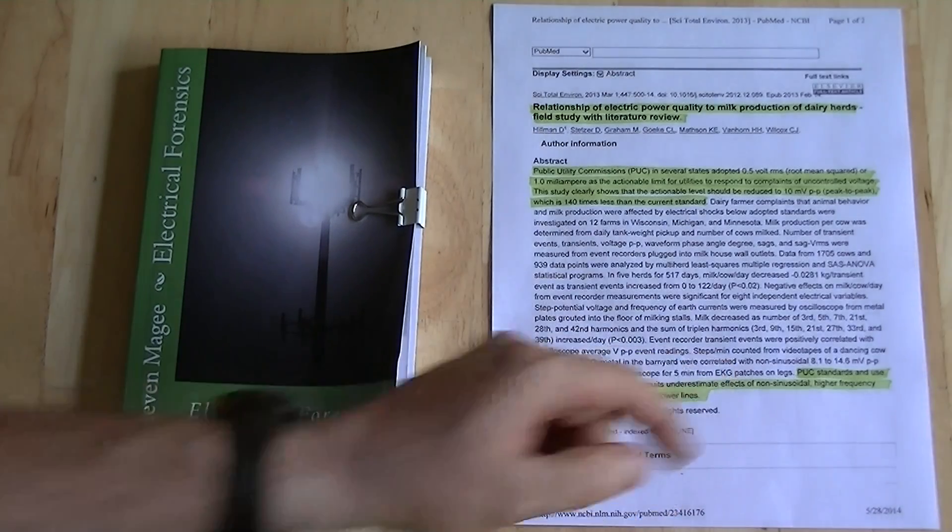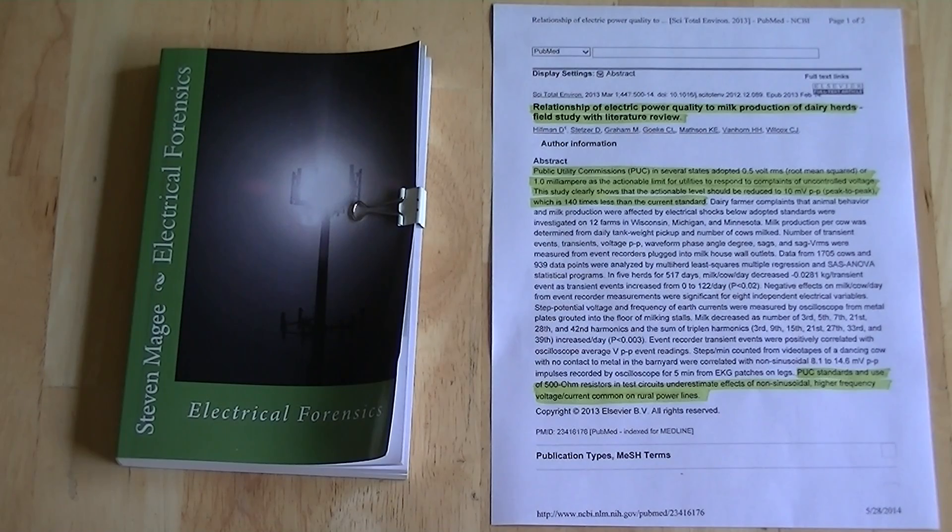It states, PUC standards and use of 500 ohm resistors in test circuits underestimate the effects of non-sinusoidal higher frequency voltage and current common on rural power lines.